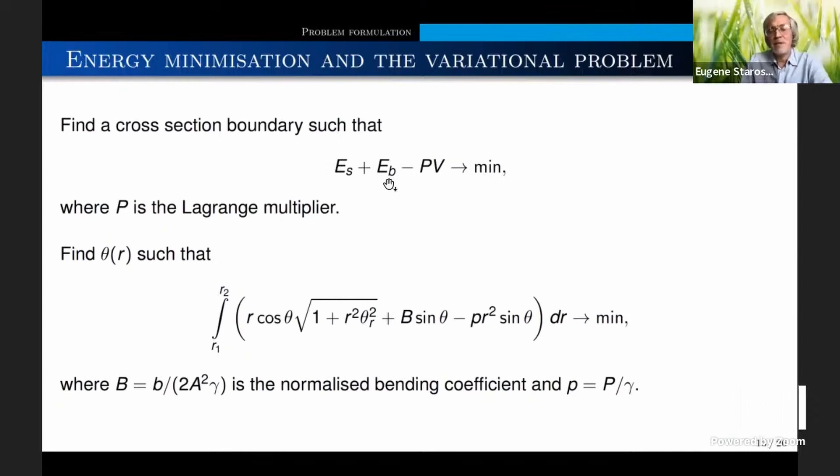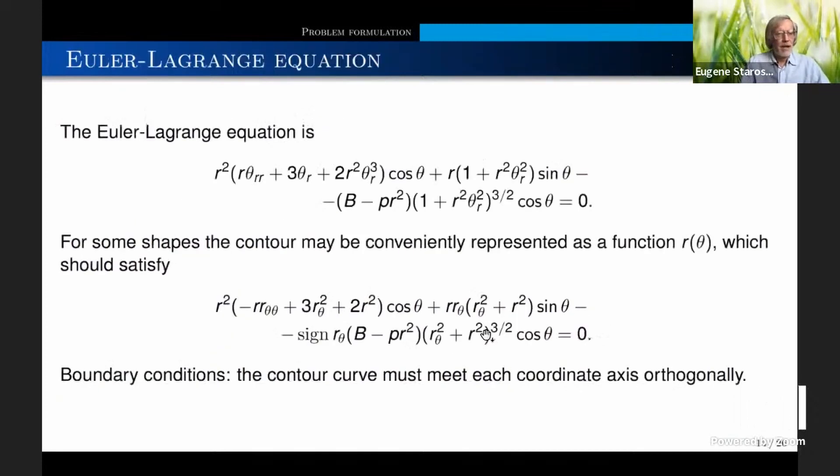And try to minimize the sum of the energies with the condition of constant volume. P is Lagrange multiplier, which is pressure. I want to minimize this. I account only for bending stiffness. In principle, you can ask about the twisting. There are recent papers that say it's not so important. But in principle, it can be included, probably in the future, if necessary. Now I just substitute these energies and the expression for the volume. And I get the variational problem. The important are two coefficients. B is the bending coefficient. It's proportional to the persistent length of double-stranded DNA. And P is the normalized pressure.